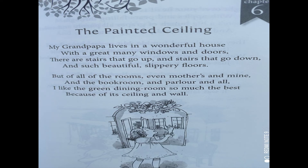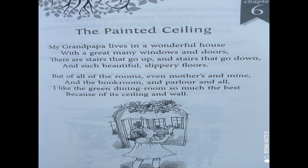The poem begins: 'My grandpapa lives in a wonderful house with a great many windows and doors. There are stairs that go up and stairs that go down, and such beautiful slippery floors.' The poet is telling us about grandfather's house — how wonderful, nice, and good-looking it is. It has so many windows and doors, suggesting there could be many rooms as well.